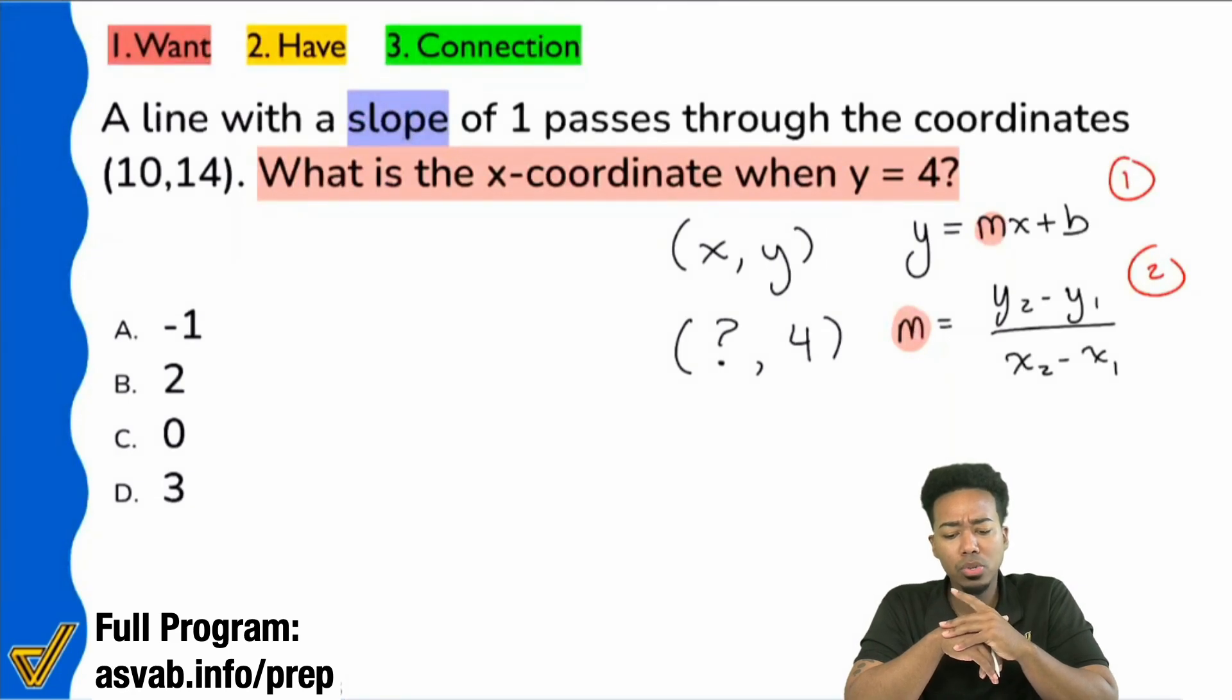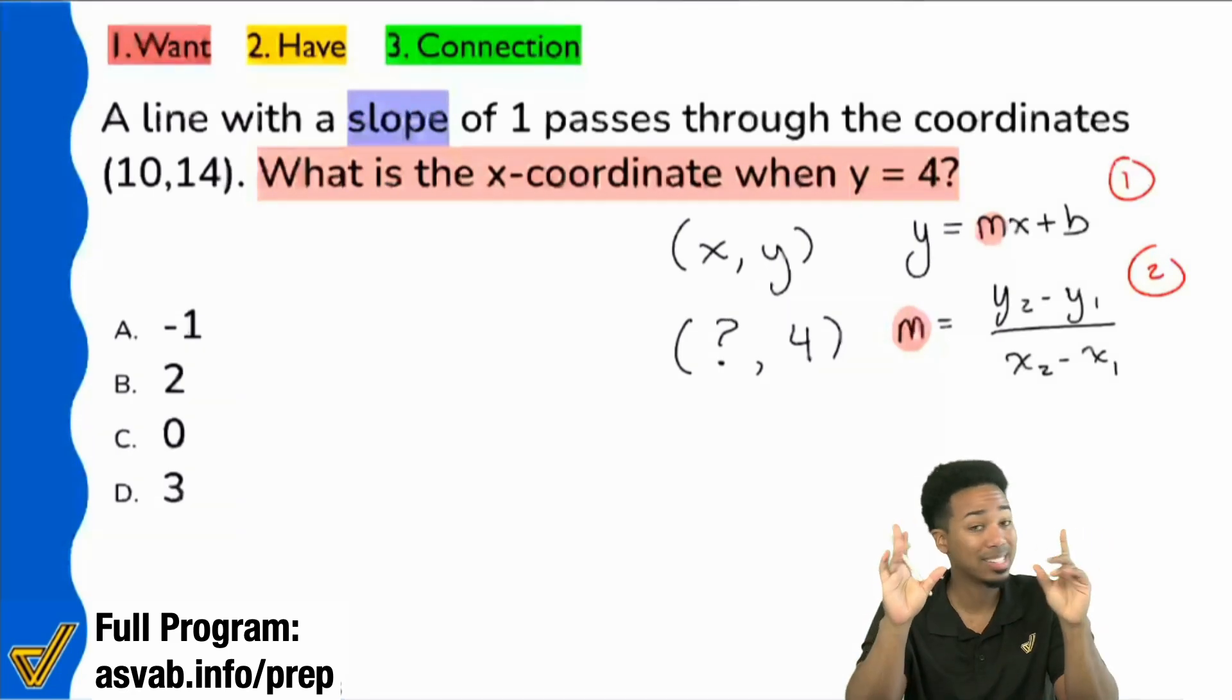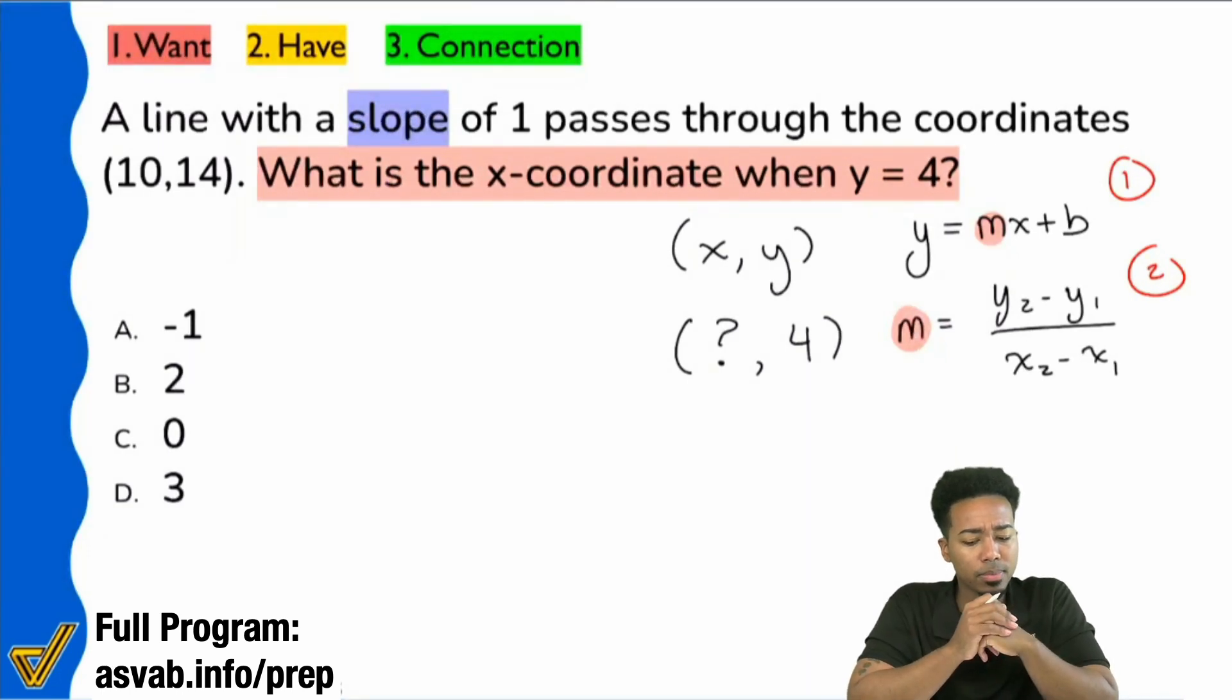So which of these formulas do you think best applies to this problem? Because both of them use slope, right? The first one has slope right here. And the second one, slope is by itself. Okay, so why are you saying, I see the majority of us, I see that the majority of us here are saying number two. Why is that? Why is the second formula the best one to go with? Why is that? Who can tell me why?